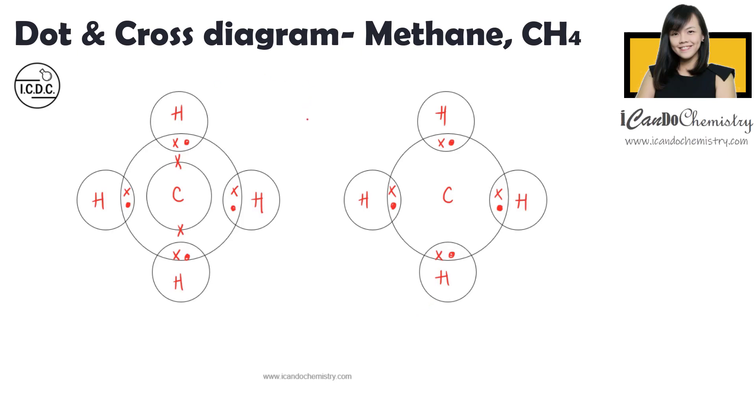So for the structural formula, there'll be one carbon, four hydrogen, and between carbon and each of the hydrogen, a single bond is formed. One single bond represents the sharing of two electrons.